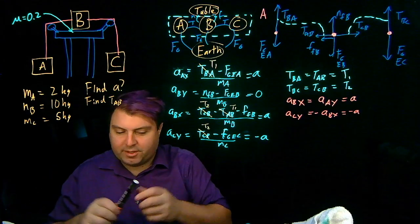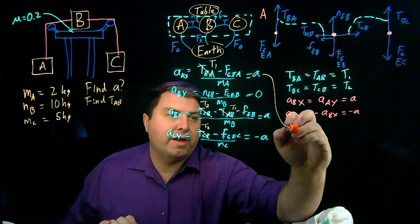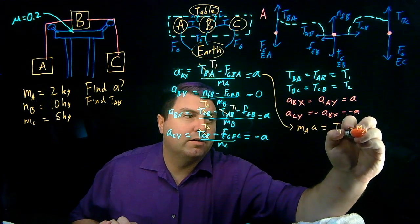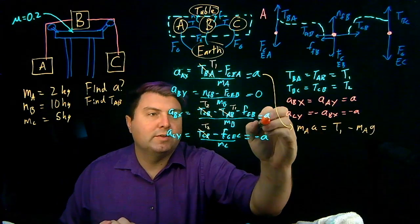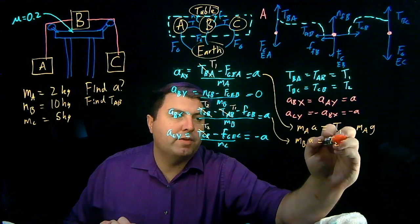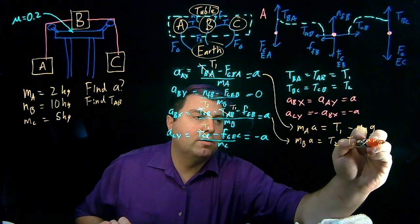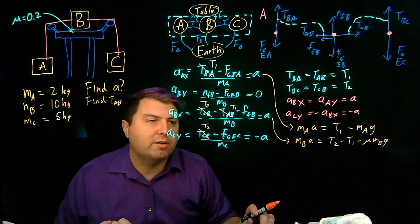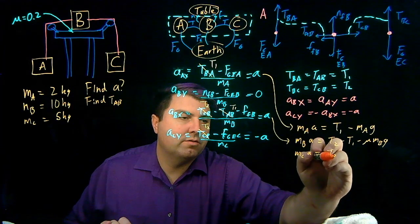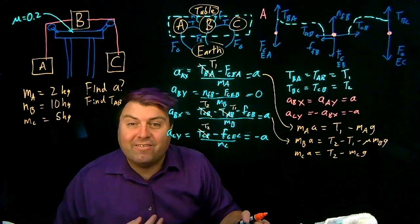So what we get from this is a couple of equations. So I can multiply this by MA. So I have MA times A equals T1 minus MA times G. Here I have MB times A is equal to T2 minus T1 minus mu MBG. We can solve pretty quickly that the normal force is equal to just MBG. And then here we have MCA is equal to T2 minus MCG.